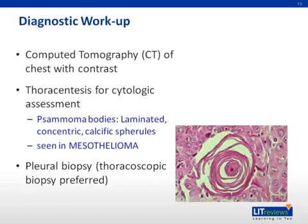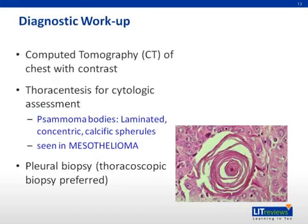Surgical lung biopsy is needed to confirm the diagnosis with VATS — biopsy specimen is positive in more than 80% of cases — and with open thoracotomy in more than 90%. Mesothelioma may be differentiated from metastatic adenocarcinoma by immunohistochemical staining. The psammoma body shown here is a commonly tested finding associated with mesothelioma.